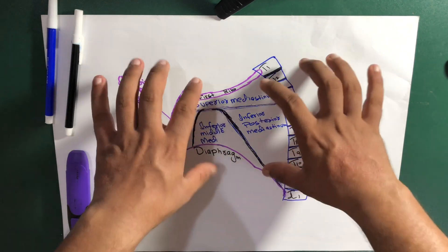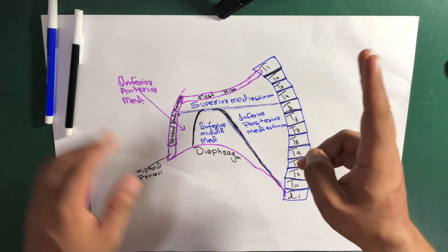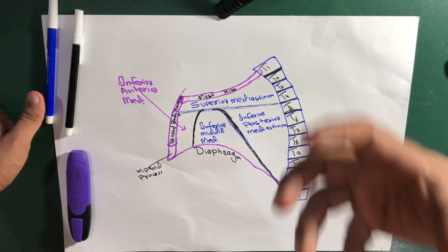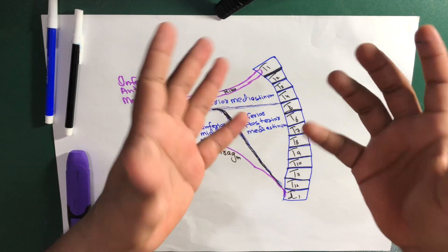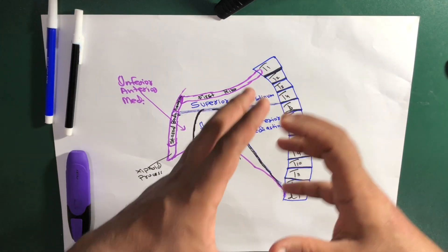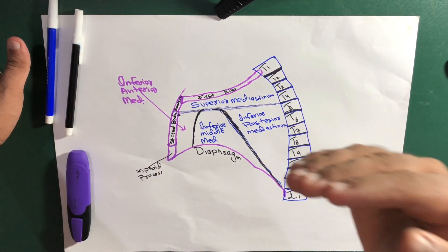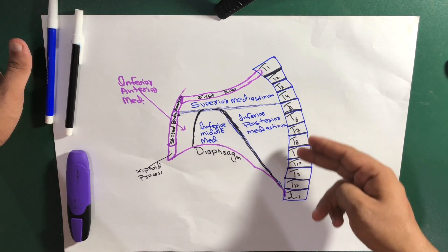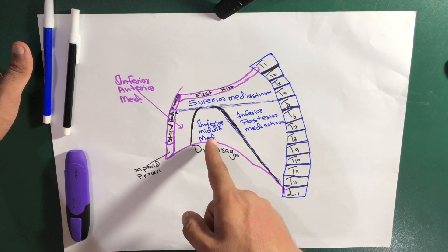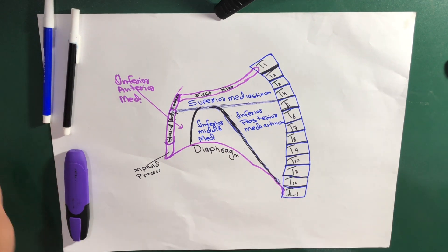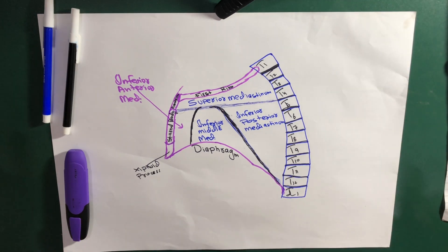We can further divide the mediastinum into two regions: the superior mediastinum, which has its own contents, and the inferior mediastinum. The superior mediastinum is relatively small, while the inferior mediastinum occupies a lot of area. The inferior mediastinum is further divided into three parts: the inferior anterior mediastinum, the inferior middle mediastinum, and the inferior posterior mediastinum.